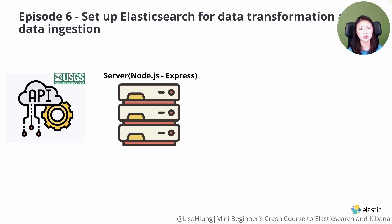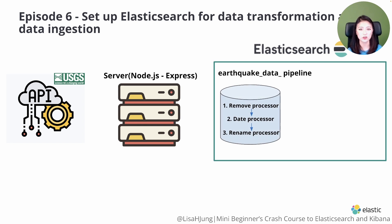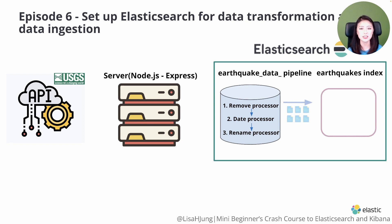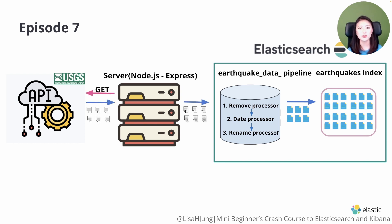In the previous episode, we set up Elasticsearch for data transformation and data ingestion. We created the earthquake data pipeline for data transformation, and we also created an index called earthquakes with the desired mapping. This is where the transformed earthquake data will be indexed. In this episode, we'll set up the server to retrieve earthquake data from the USGS API, then send the retrieved data to the Elasticsearch earthquake data pipeline. The server will also instruct Elasticsearch to ingest the transformed data into the earthquakes index.